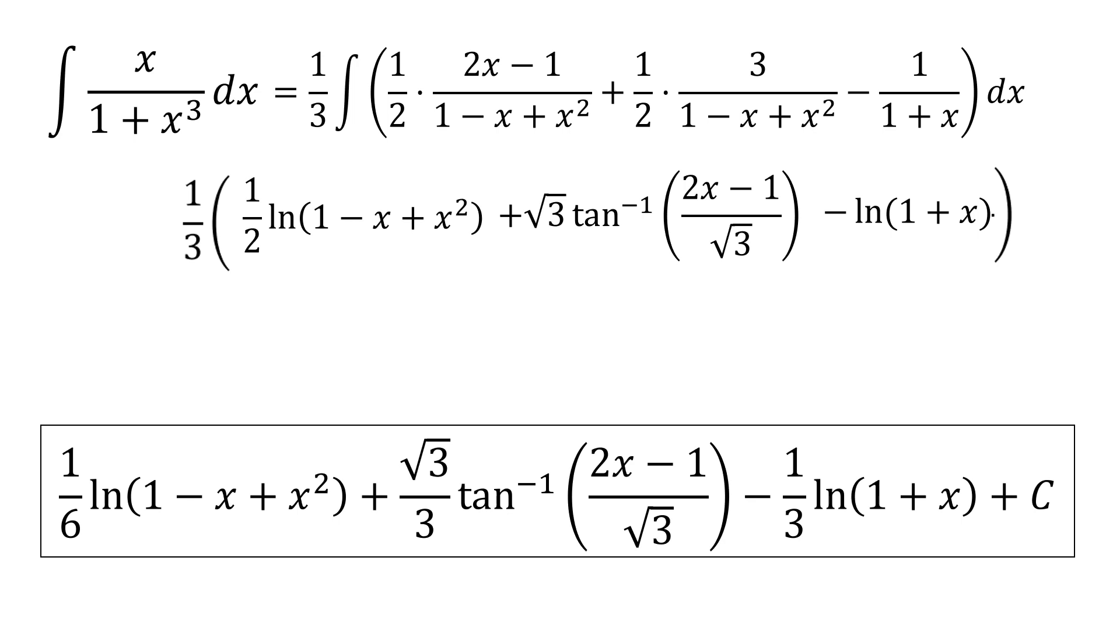I can now insert this into the place of the second integral, and I can distribute the 1 third among the parentheses. This gives me a final answer of 1 over 6 times natural log of 1 minus x plus x squared plus square root of 3 over 3 times the inverse tangent of 2x minus 1 over the square root of 3 minus 1 third times the natural log of 1 plus x plus, of course, the constant of integration C.